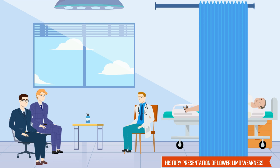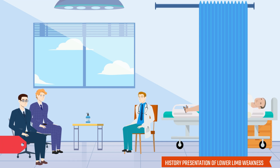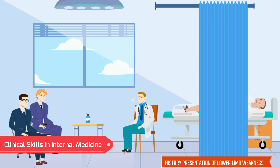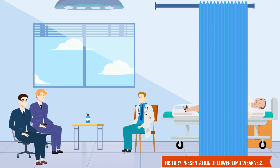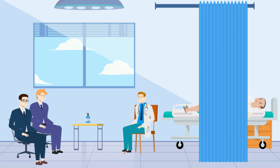Moreover, there is no history of weight loss or contact with a tuberculosis patient. There is no history of such an episode in the past, and no family history of such a disease. He is non-diabetic and non-hypertensive. He was not taking any medication on a regular basis before the development of this weakness. He is married and has two children.